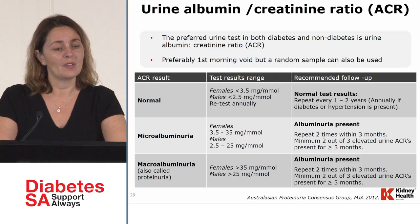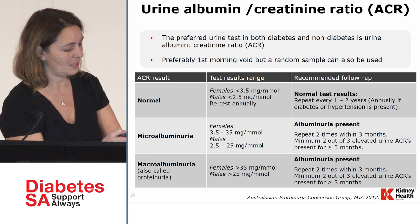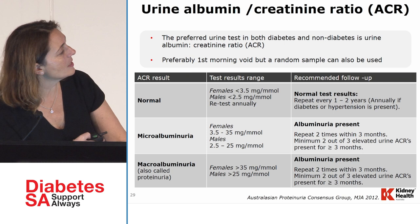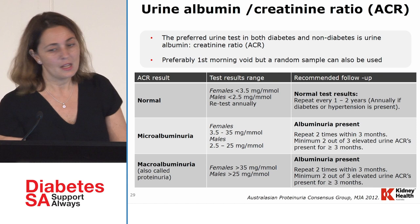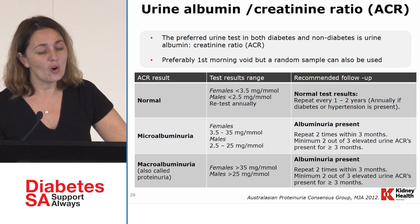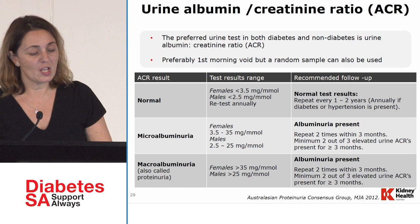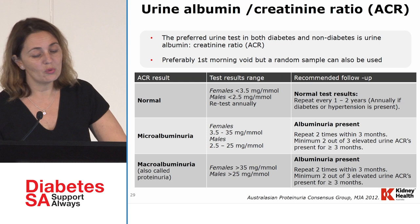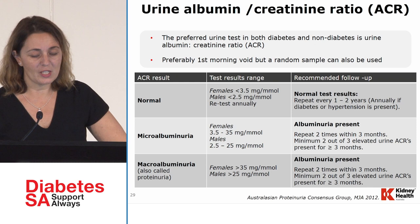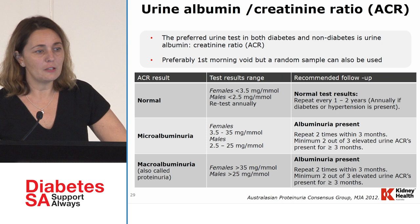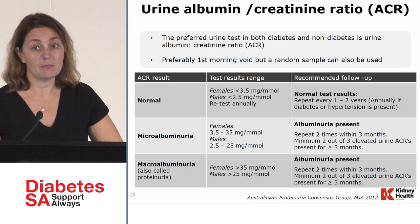How do we measure albumin? We use the albumin-creatinine ratio. Normal values are less than 3.5 in females and 2.5 in males. Microalbuminuria is 3.5–35 in females and 2.5–25 in males, and should be repeated every three months. Macroalbuminuria is more than 35 in females and more than 25 in males. This distinction matters because treatment differs, and macroalbuminuria indicates significant kidney function deterioration.